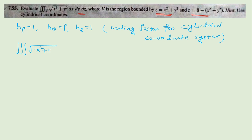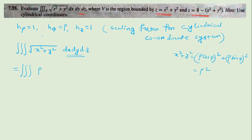In cylindrical coordinates, x²+y² is nothing but (ρ cos φ)² + (ρ sin φ)² = ρ². So the integrand x²+y² becomes ρ², and dx dy dz becomes the product of scaling factors: 1 · ρ · 1 · dρ dφ dz. So the volume element gives us ρ² · ρ dρ dφ dz = ρ³ dρ dφ dz... wait, the integrand ρ² times dρ dφ dz gives ρ³ dρ dφ dz.